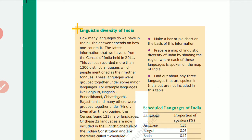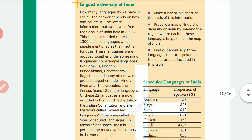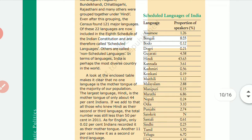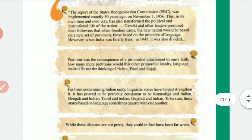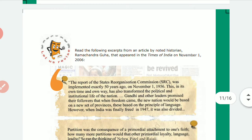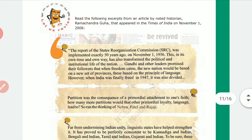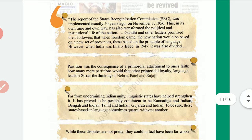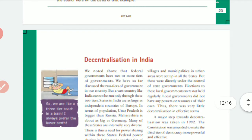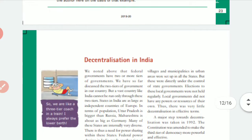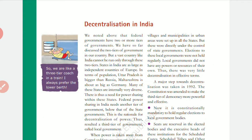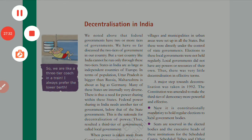Students, please read the chart on the linguistic diversity of India — it shows which languages are recognized as scheduled languages in the constitution. There are also articles by noted historian Ramchandra Guha in the Times of India newspaper — read those and try to relate them to the topic we have just covered. The next topic, decentralization in India, will be covered in the next lecture. Keep studying!